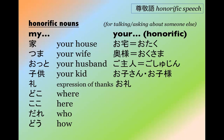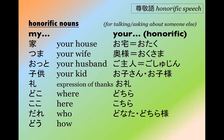Orei is an expression of thanks — your expression of thanks. For place words: doko and koko become the polite dochira and kochira. There's also sochira and achira, which are polite ways of saying the same thing. 'That' is donata or dochirasama — so not just where, but 'who' is also dochirasama or donata. 'How' instead of do becomes ikaga. These are nouns you just have to remember if you want to speak honorifically.